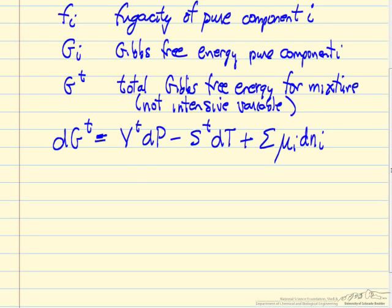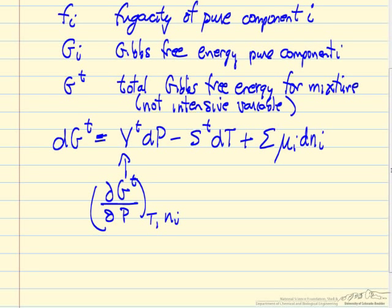The relation found in thermodynamics textbooks results from writing down the first law and then using entropy to replace heat in a reversible process. Then using the definitions of H and then G, we end up with this relation. The first two terms apply for a single component, and for a mixture we have added another term. The exact differential means that volume is the derivative of the total Gibbs free energy with respect to pressure, keeping temperature constant and keeping the number of moles of each component constant.